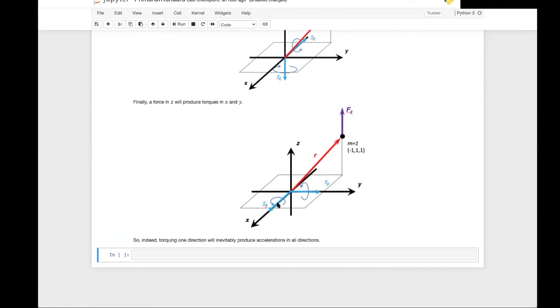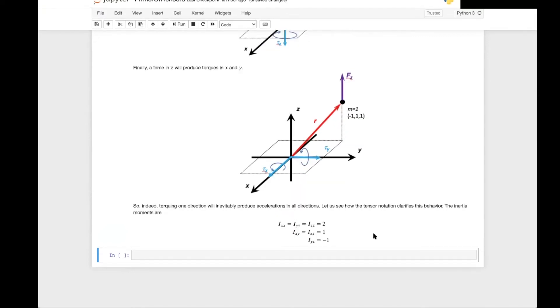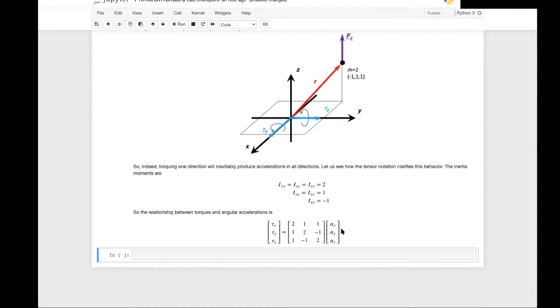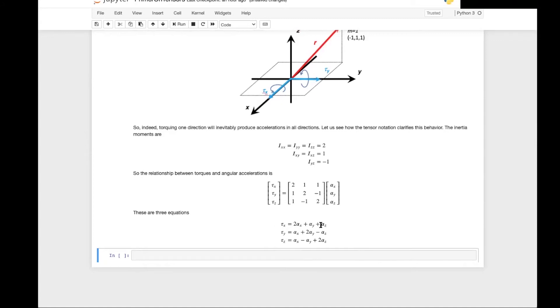So indeed torque in one direction will inevitably produce accelerations in all of the other directions. So let us see how the tensor notation clarifies this behavior. Going back to the inertia tensor, the inertia moments that you get from this configuration are given by this. So writing in matrix form you have the relationship between the torques and the angular accelerations. You see that all components are non-zero. So these three equations spelled out individually are given by these expressions.